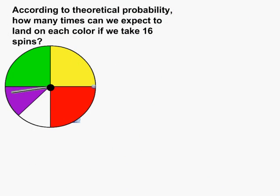In this problem, we are trying to determine: if we are to spin the spinner 16 times, how many times can we expect the spinner to land on each of the five given colors according to theoretical probability?